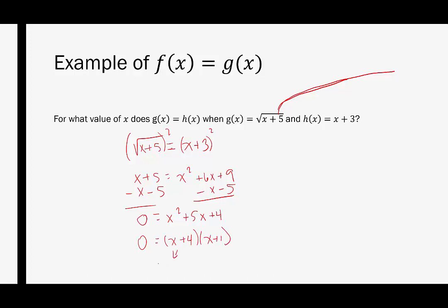It looks like we have something that's factorable because we're looking for two numbers that multiply to 4 and add up to 5, which would be 4 and 1. So we can say x plus 4 times x plus 1. Set each one equal to 0. If x plus 4 equals 0, then x equals negative 4. If x plus 1 is equal to 0, then x equals negative 1. These are possible solutions. This is a radical, so we do need to check for extraneous solutions.